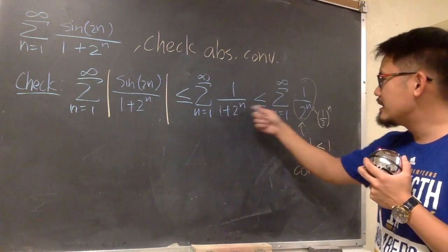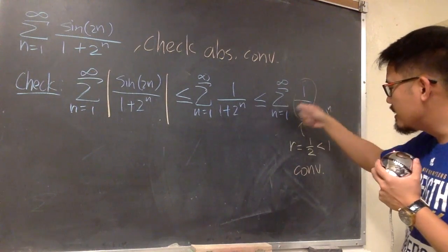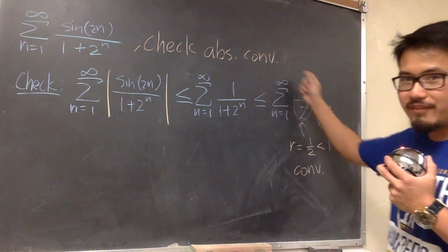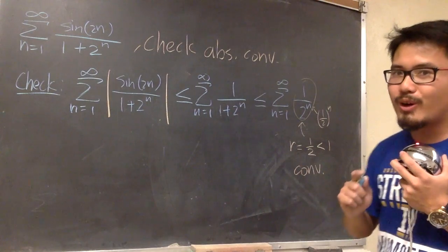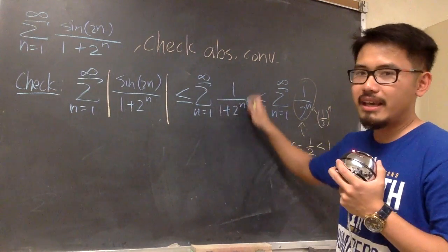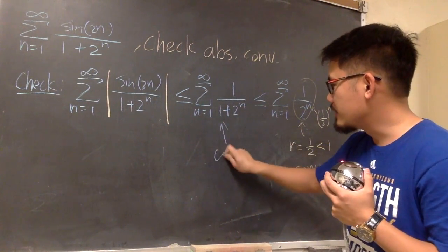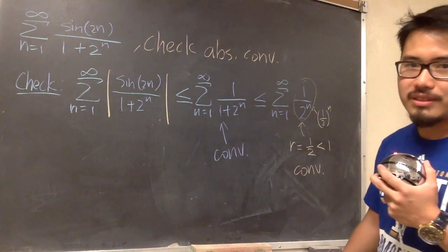So now we know this is less than or equal to that, and this is a convergent, which is the finite value. We can also conclude that this is a convergent. So this right here converges.